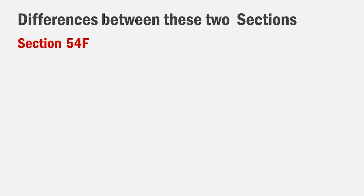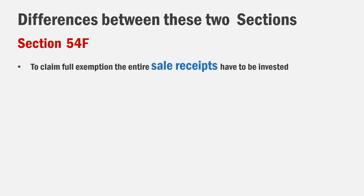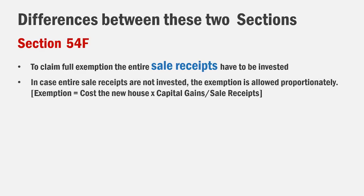Under Section 54F, you must invest the entire sale proceeds — not just the capital gains — to claim full exemption. If you invest all the sale proceeds in the new house, then the entire capital gain is exempt. If you invest only a part — say you received 100 and invested 50 — then you get exemption only on 50% of the capital gains proportionally.